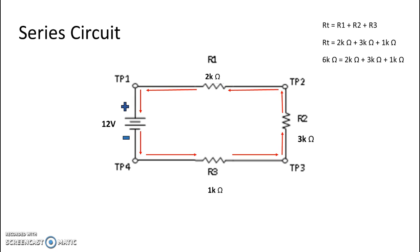Once you have total resistance, you can use Ohm's law of E equals I times R to get total current. So by taking my total applied voltage of 12 volts, dividing it by 6k ohms, I get a total current of 2 milliamps.